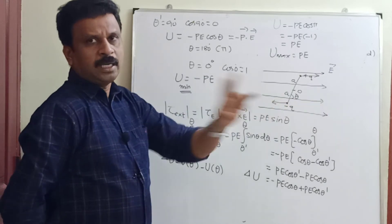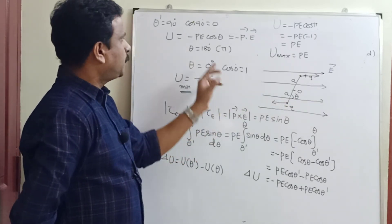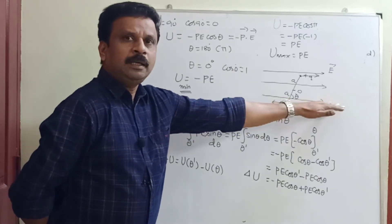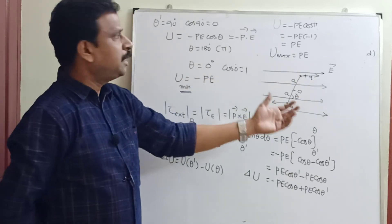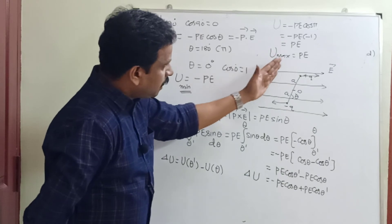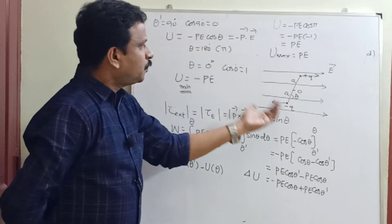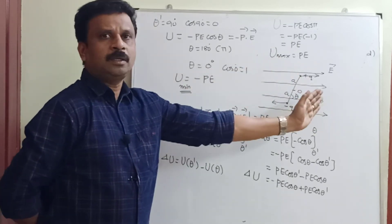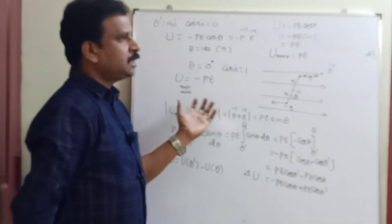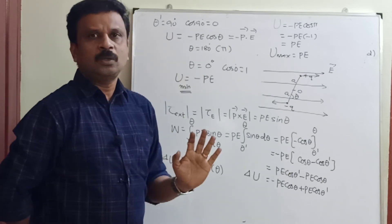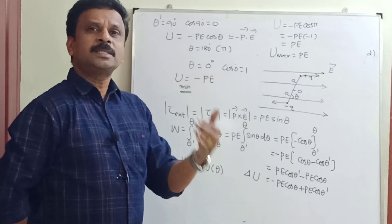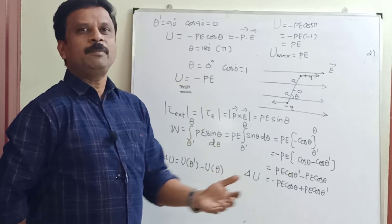So to summarize: when the dipole moment vector is anti-parallel to the electric field, maximum energy is stored. When the dipole moment vector is aligned with the electric field, you get minimum energy. When perpendicular (theta = 90°), the energy is zero. Go through this carefully — it is a very important question for your examination.